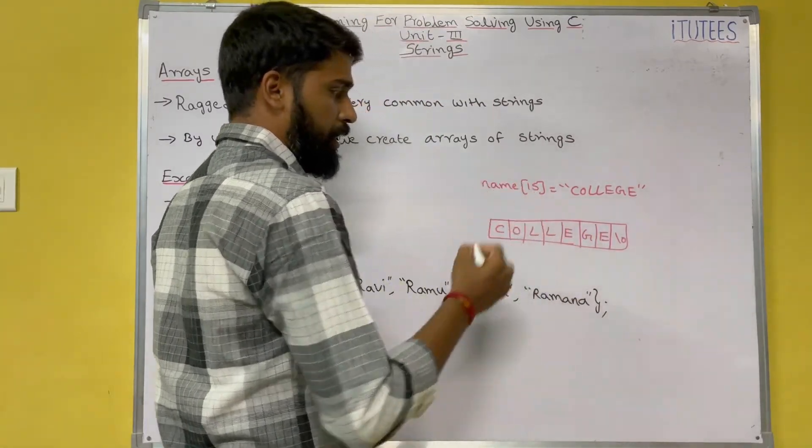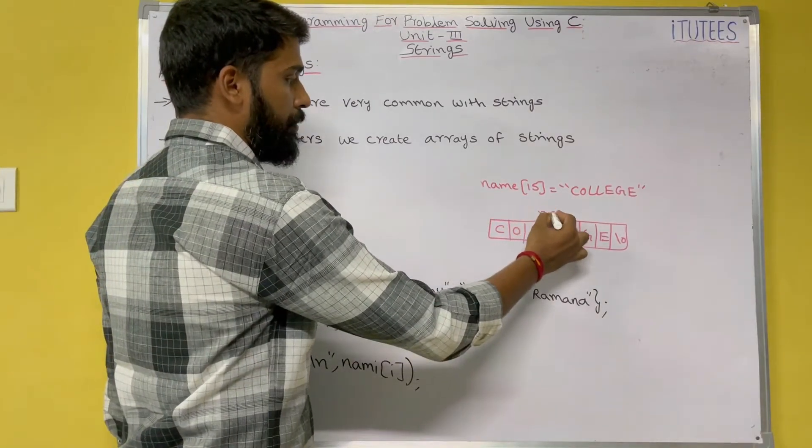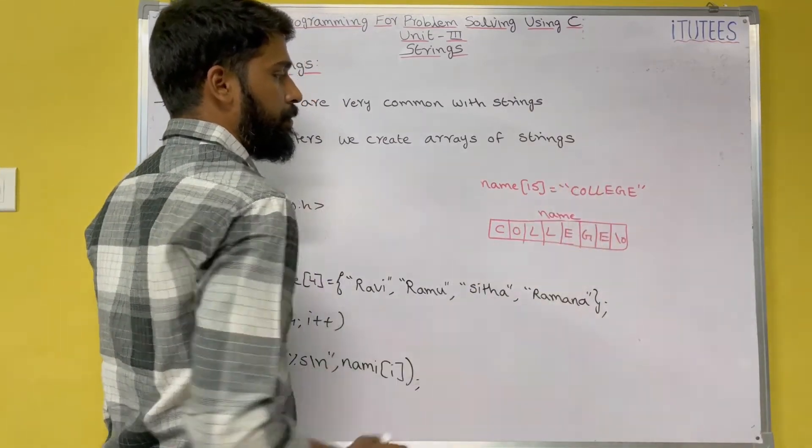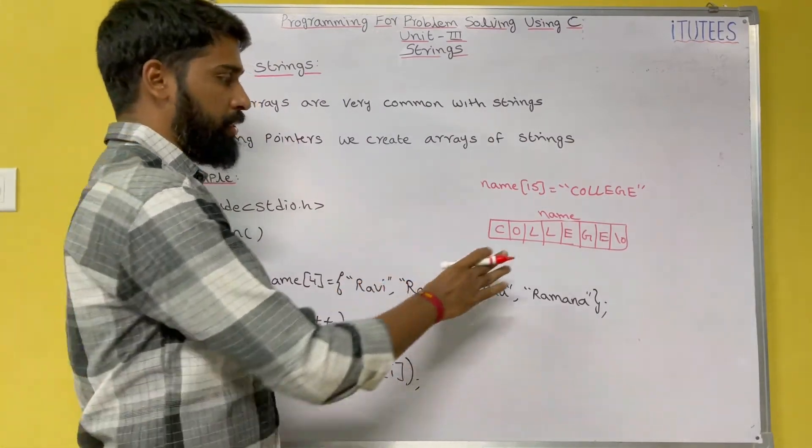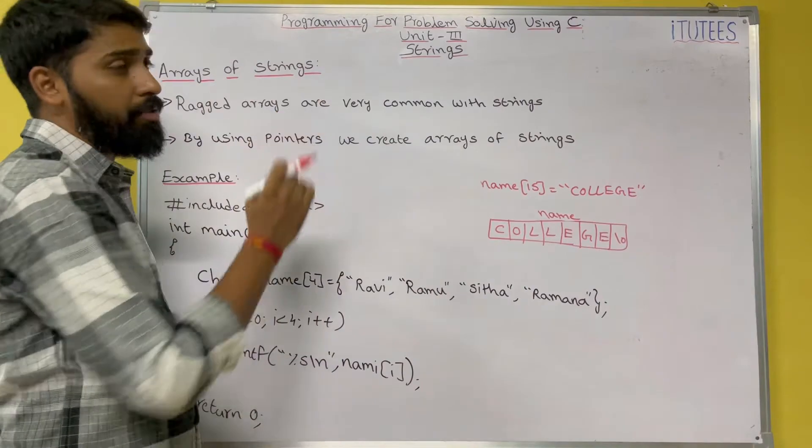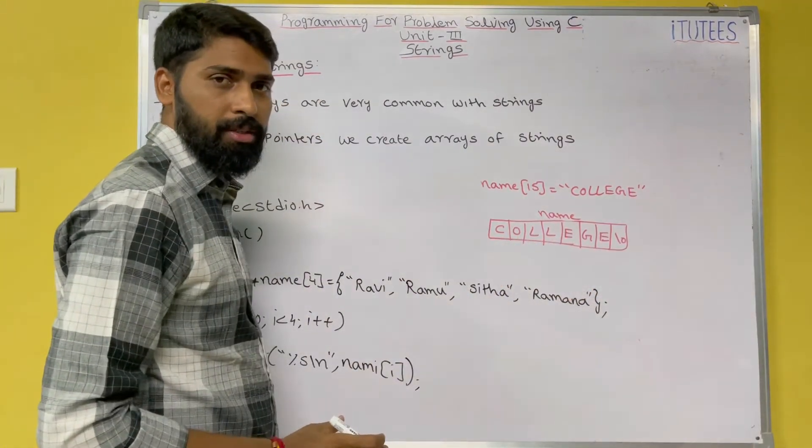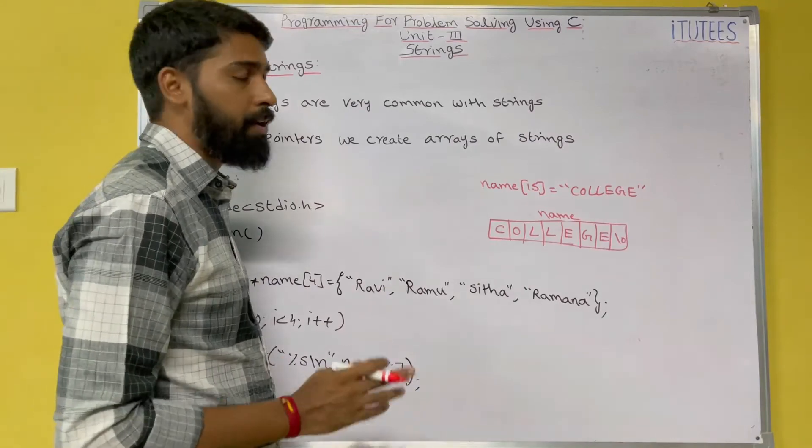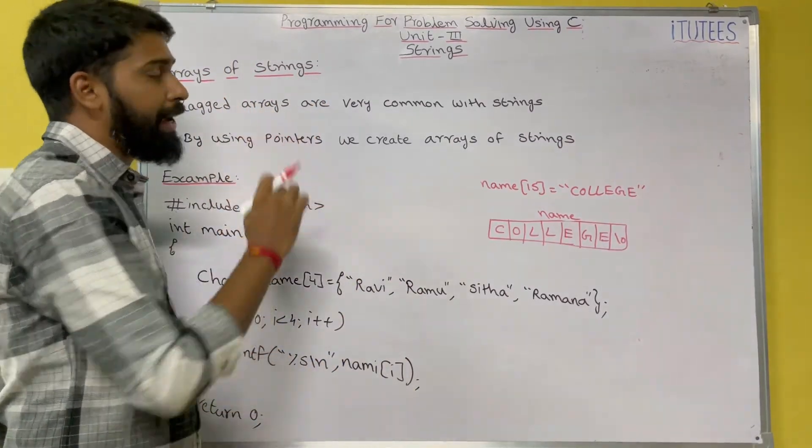So \0 is a delimiter. The array name is name. What is a string? A string is a character array. This is the character array. Now array of strings means you can store these type of strings in an array. That we call ranked arrays.